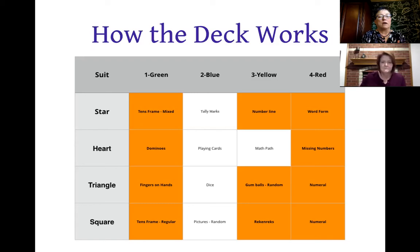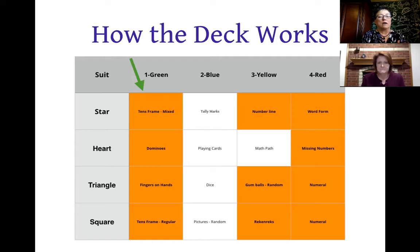To give two to four players an equal chance of recognizing their quantity, we needed to make an easy version for every suit. Looking down the green column, kids have the best chance of recognizing a number when it's shown on a tens frame, with dominoes, or with fingers on a hand. Those are the representations in the green column — the easiest to recognize. As you move from left to right on the chart, the representations get a little more difficult.